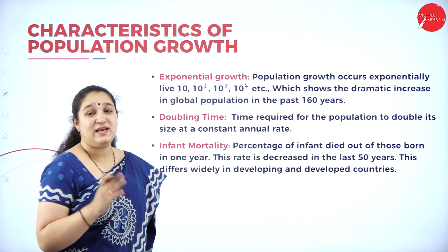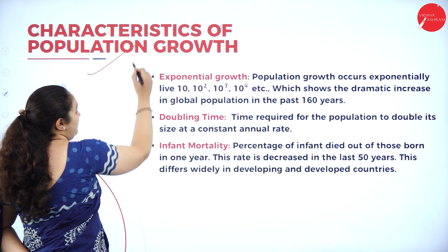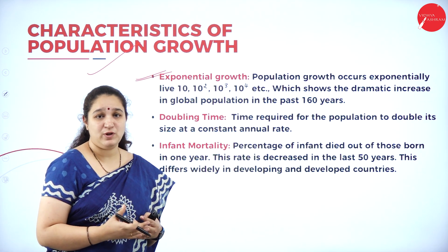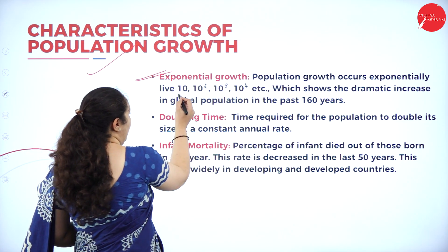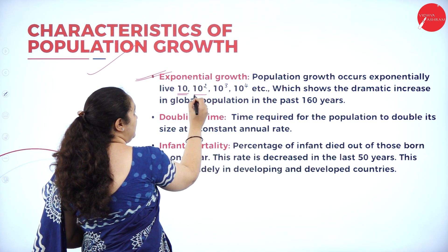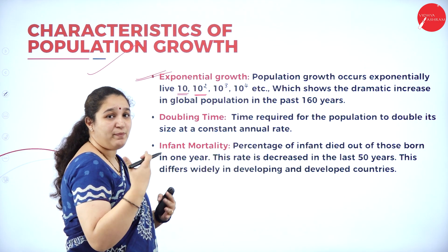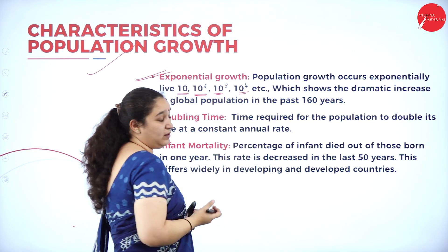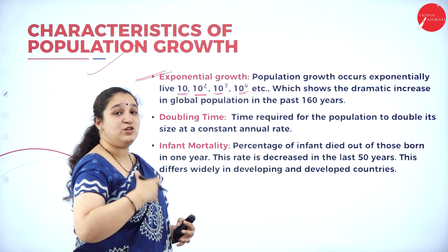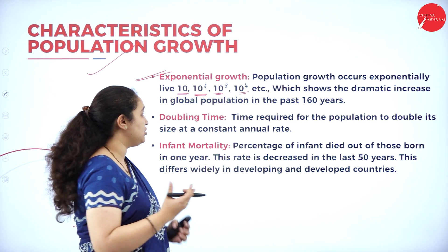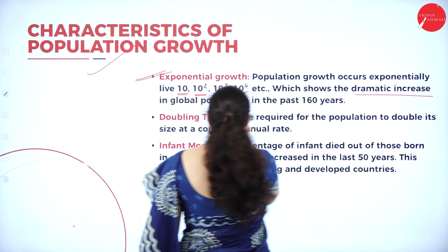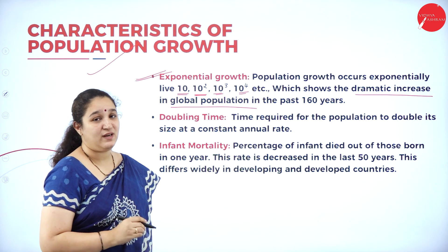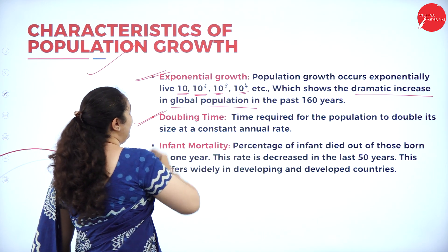Next are the characteristics of population growth. First is exponential growth. Population growth occurs exponentially — if it is 10, it can become 10 to the power of 100; 100 can become 1000; 1000 can become 10,000. Due to this exponential growth of population, there has been a dramatic increase in the global population over the past 160 years.